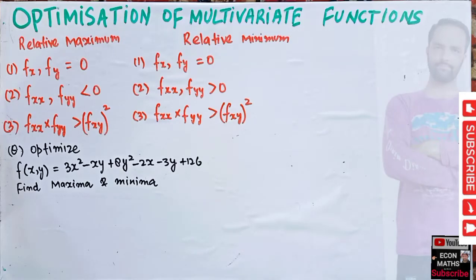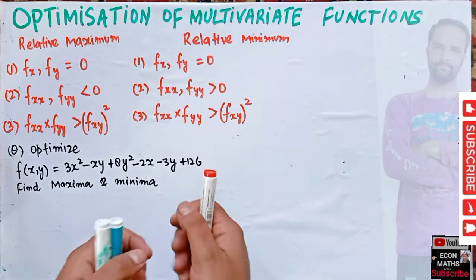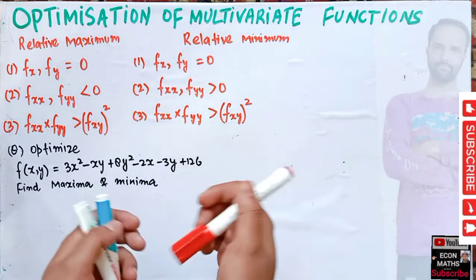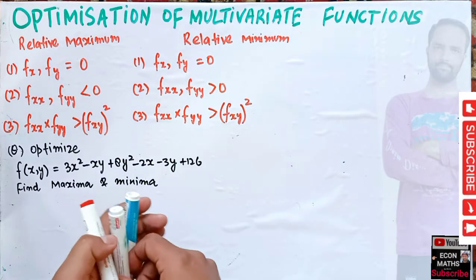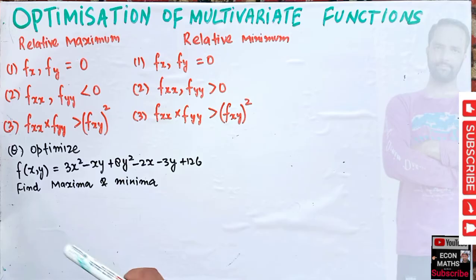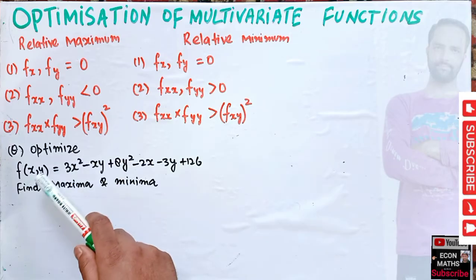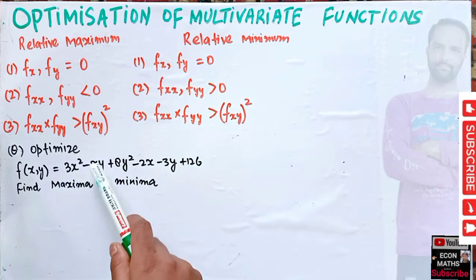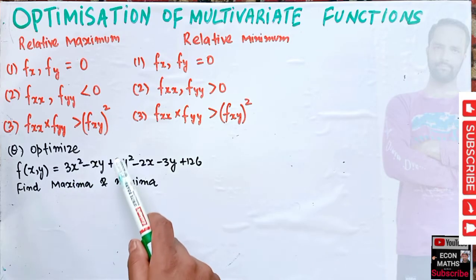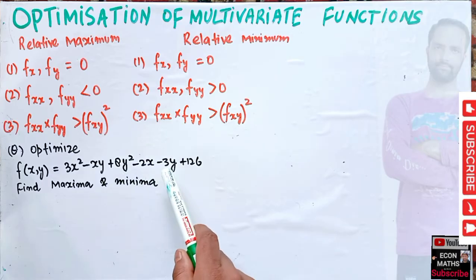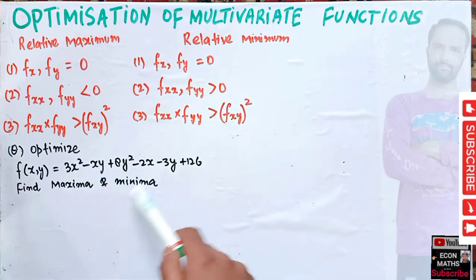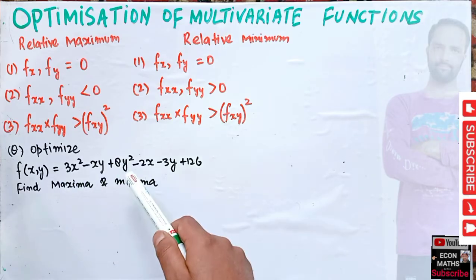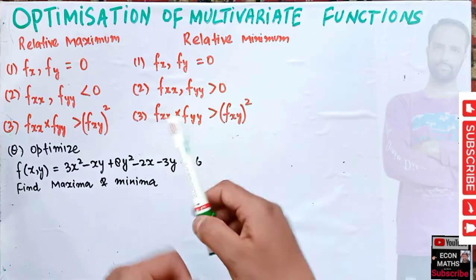In this video we will try to solve a question on optimization of multivariate functions that was asked on the Telegram channel of Econ Maths. The question is: optimize f(x, y) = 3x² - xy + 8y² - 2x - 3y + 126. We have to find out whether this function has maxima or minima.